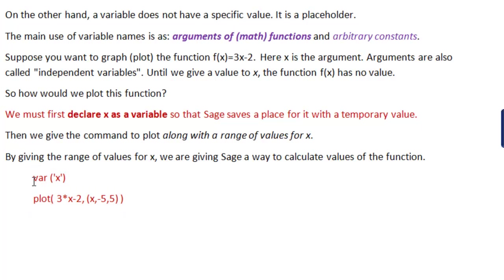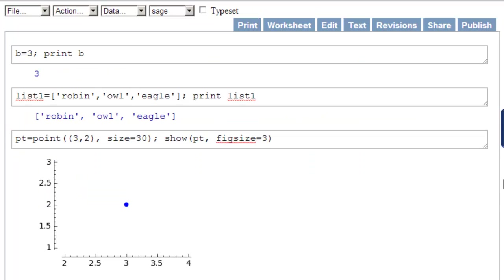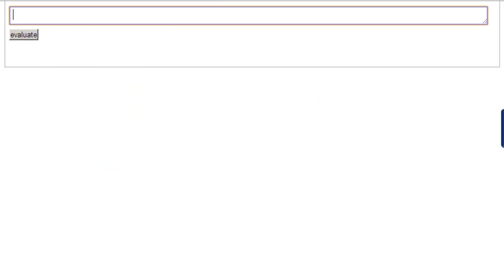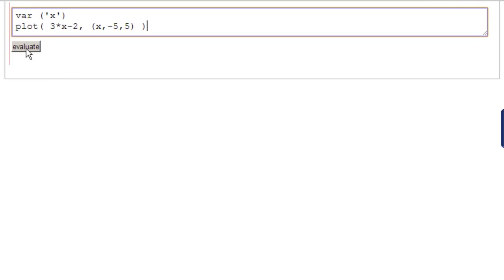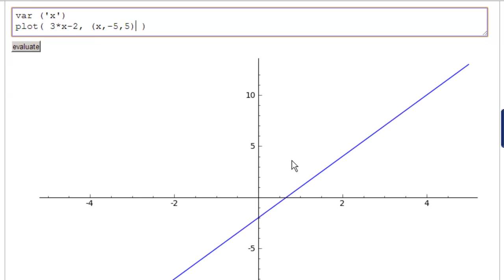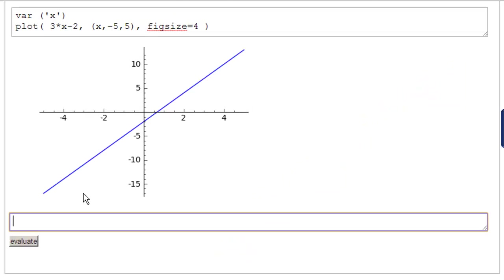Let's take that code and put it in Sage. So here we are in Sage field. Paste and evaluate. And of course we get a giant plot. Let's change this to figure size 4. There we go.